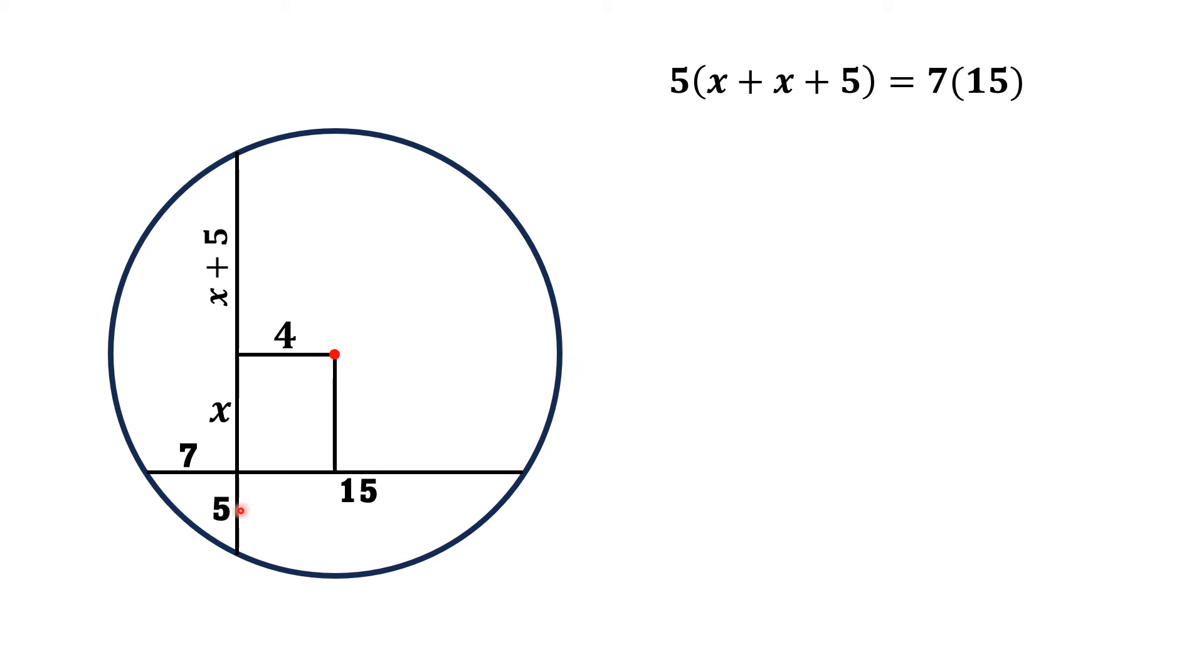Now by chord-chord theorem, 5 multiplied by x plus x plus 5 is equal to 7 multiplied by 15. From here we have 5 times 2x plus 5 is equal to 105, and from here 10x plus 25 is 105. 10x is equal to 80, and x is equal to 8 units.